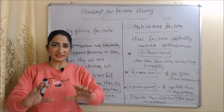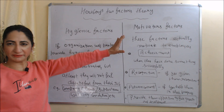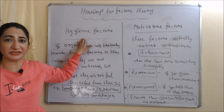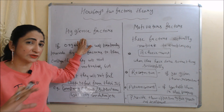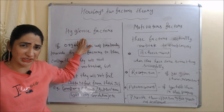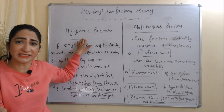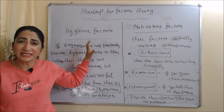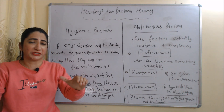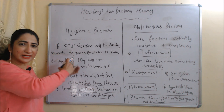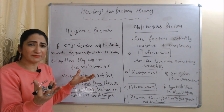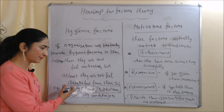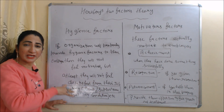Now we will see Herzberg's Two-Factor Theory. This theory talks about two factors: hygiene factors and motivator factors. Hygiene factors don't provide any kind of motivation — they just prevent job dissatisfaction. If an organization provides hygiene factors to employees, they will not feel motivated, but at least they will not feel dissatisfied from their job. Examples include company policy, supervision, and working conditions.